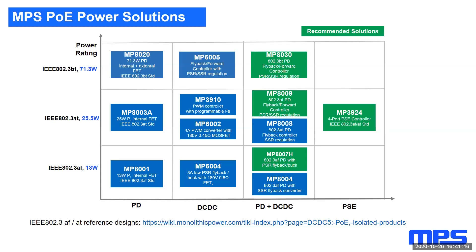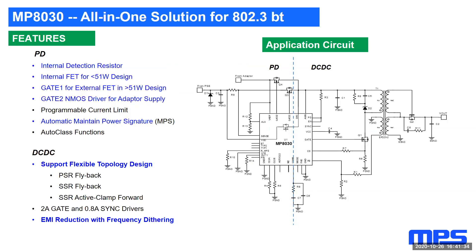MPS PoE solutions cover 802.3AF, AT, and BT specifications with different PD controllers. We offer standalone PD controllers and power supply chips as well as integrated PD solutions. The MPS MP8030 is an all-in-one PD solution compatible with the IEEE 802.3BT standard. It features an internal detection resistor, internal path switch, automatic maintained power signature, and auto class functions. It supports topologies including primary side regulated flyback, secondary side regulated flyback, secondary side regulated active clamp forward, and comes with a frequency spread spectrum function.